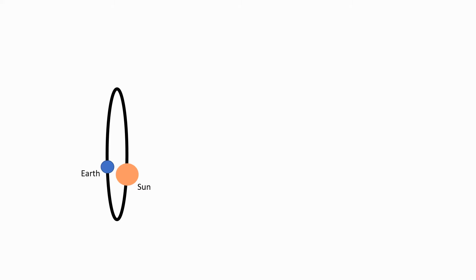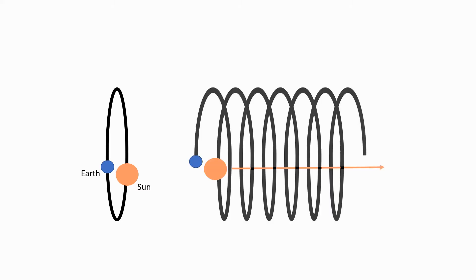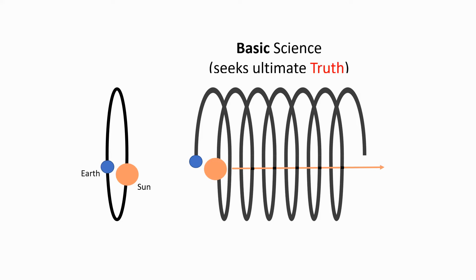...the Sun is actually not stationary, but it's moving through space — not along a straight line, as illustrated here, but around the spiral arm of the Milky Way galaxy. The Milky Way is moving with respect to our local cluster of galaxies, the local cluster is moving with respect to the universe, and the universe itself is expanding. So the actual motion of the Earth in space is vastly more complicated than a simple ellipse around the Sun.